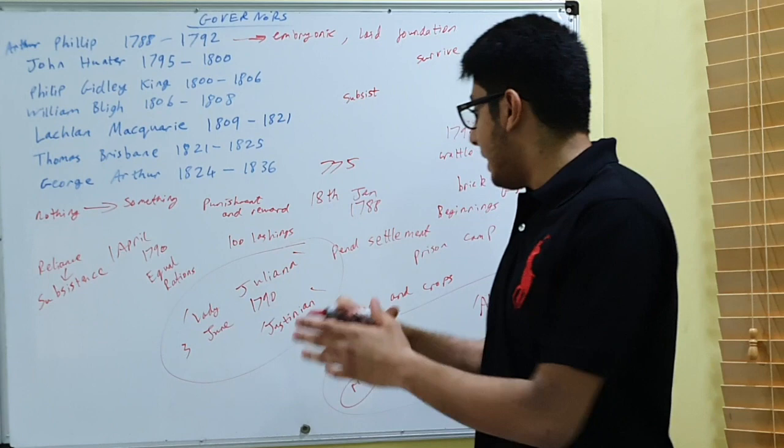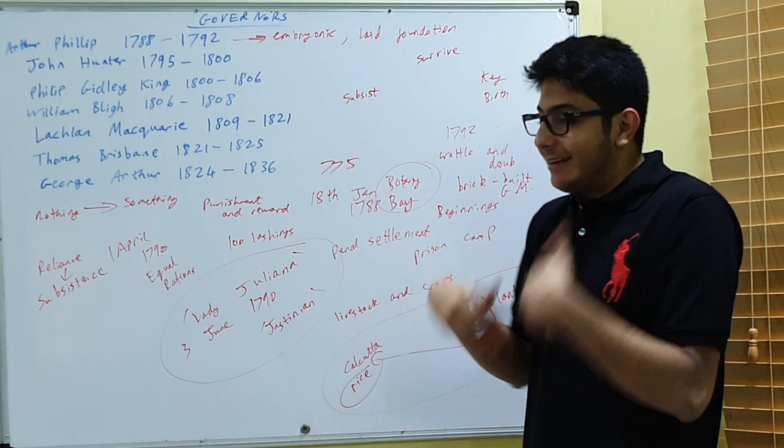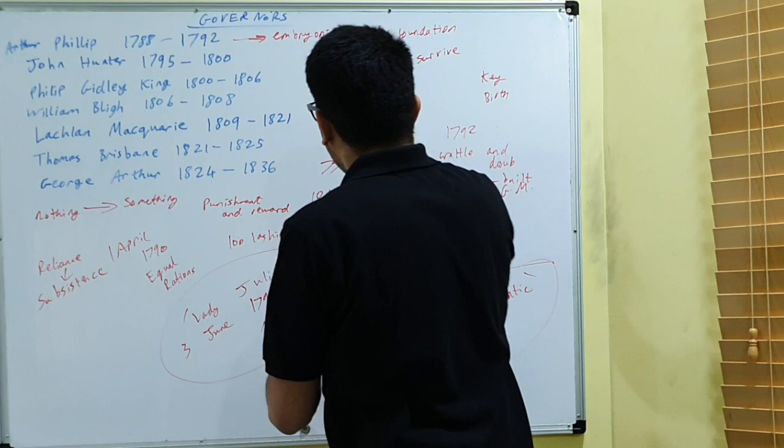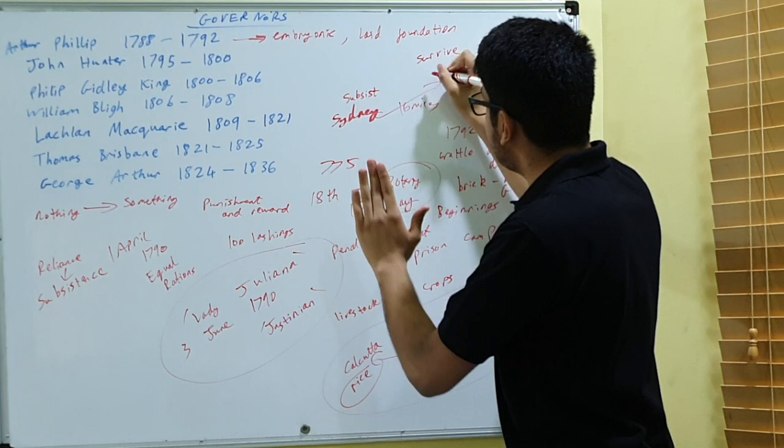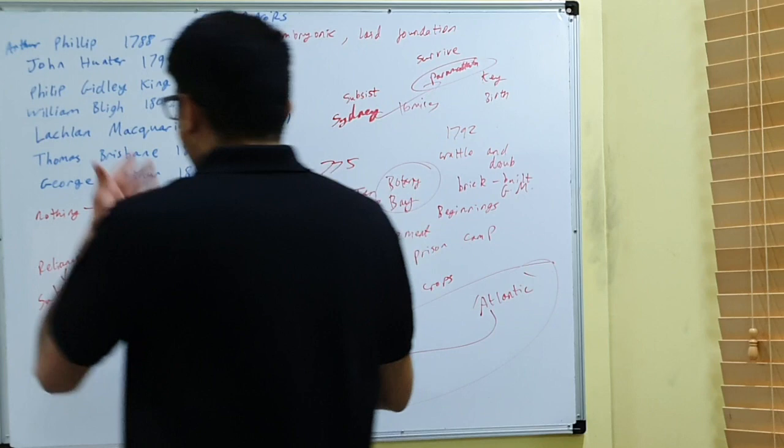Another decision that Phillip made was, instead of settling at Botany Bay on the 18th of January—because Botany Bay was infertile land—he actually settled in Sydney. But then he also went from Sydney 16 miles to Parramatta, renamed Rose Hill, because the land there was more fertile. So that obviously helped with agricultural production.